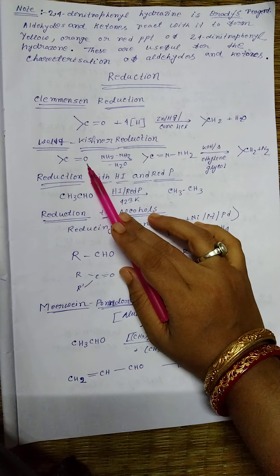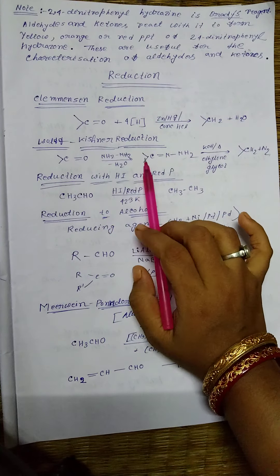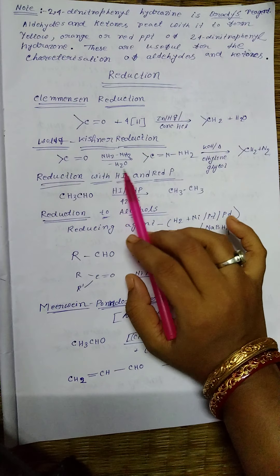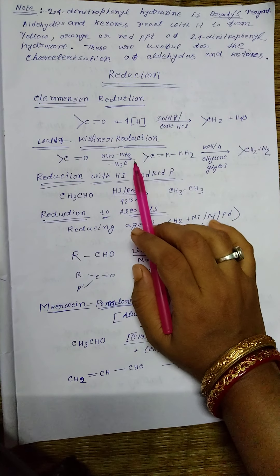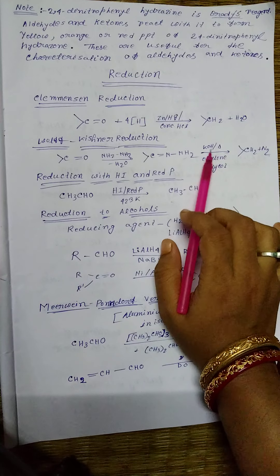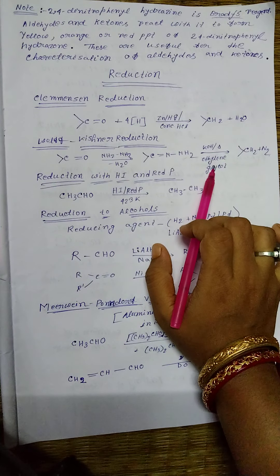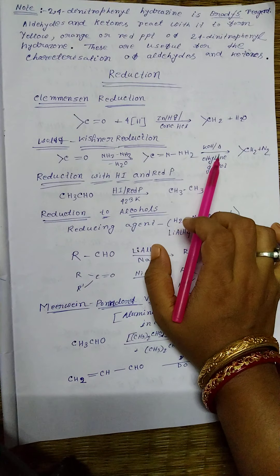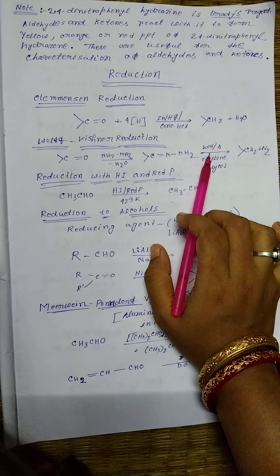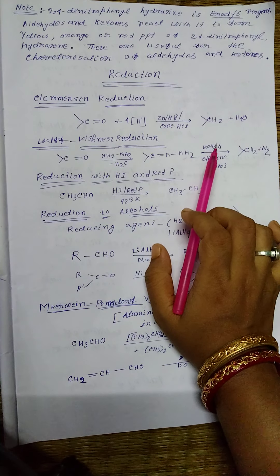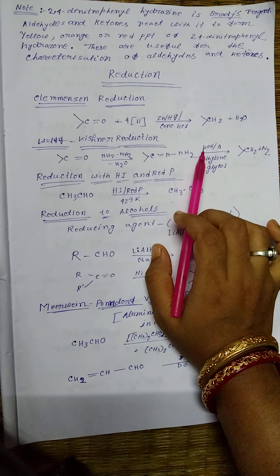In this Wolff-Kishner reduction method, the carbonyl compound, that is aldehyde or ketone, is heated with hydrazine and KOH in high boiling solvent. Ethylene glycol is used in this reduction reaction.